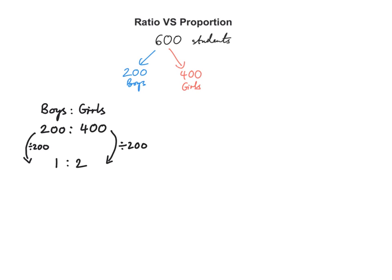The ratio between boys to girls is 1 to 2. In other words, for every 1 boy in this school, there are 2 girls. Or you can say, for every 2 girls, there is 1 boy.